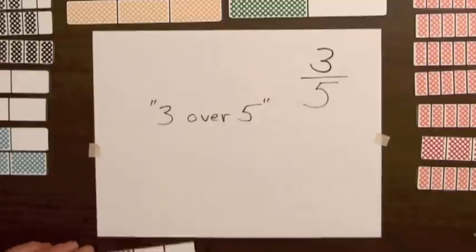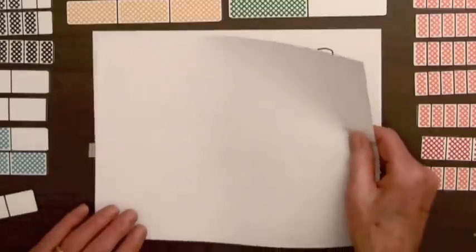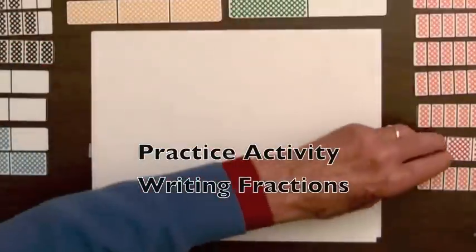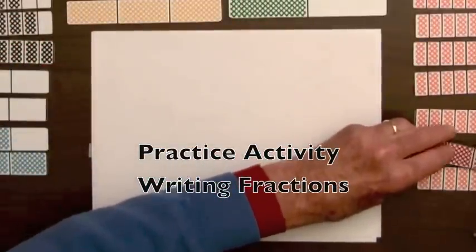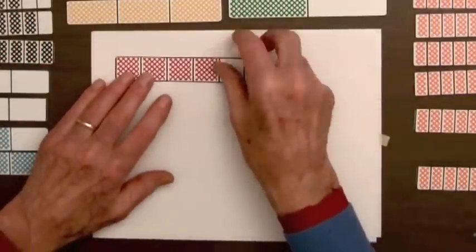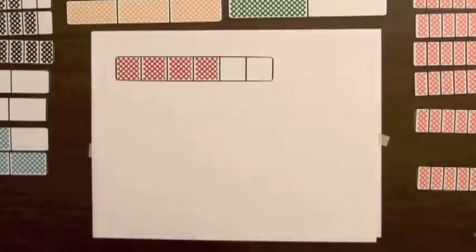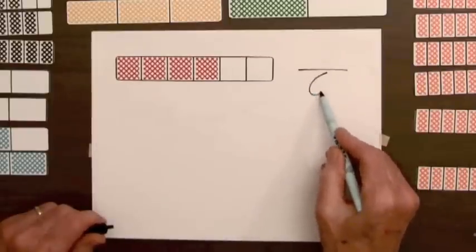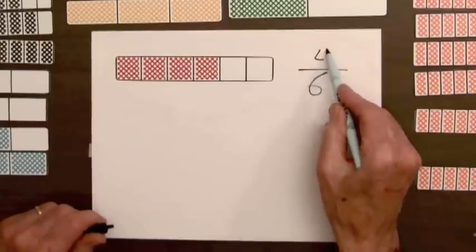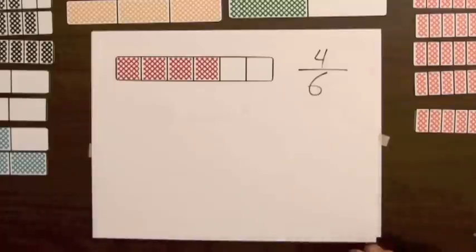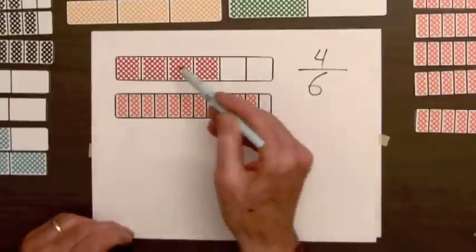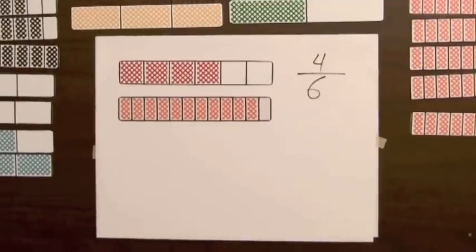For a practice activity, students could select bars, place them on a sheet of paper, and write the fraction for the bar — in this case it's six parts, four parts are shaded. You could continue this activity. Sometimes if you want to pass in the paper, you could have them trace the bar and mark off the number of parts.